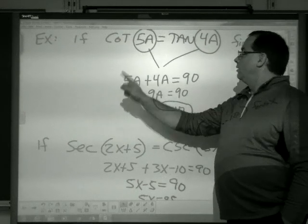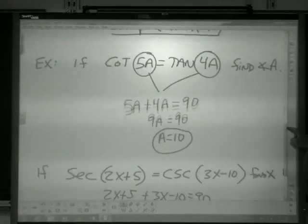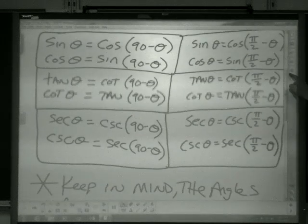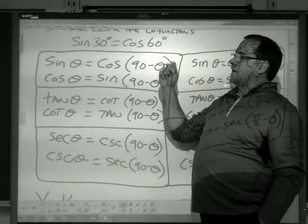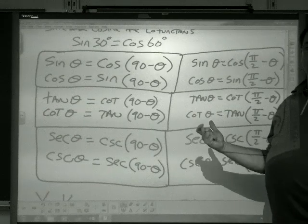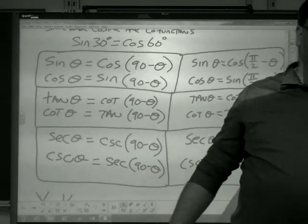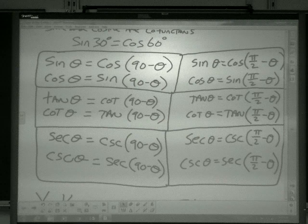Secant, cosecant, cotangent and tangent, and sine and cos. They pair up. And those angles have to add to 90. Okay? And that's it.